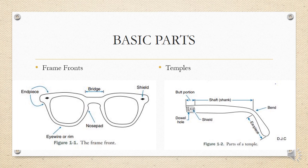Looking at the frame front closely, the eye wire or rim is responsible for holding the lens in place. The part which connects both eye wires or rims is called the bridge. The portion of the eye wire in contact with the nasal crest is called the nose part. The shields attach the end pieces of the frame front, and end pieces are the points where the temple is screwed or bolted on.